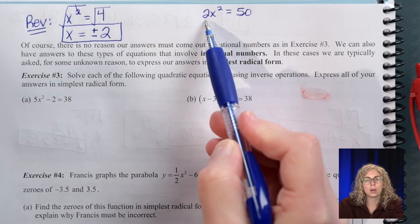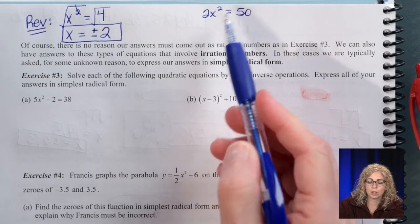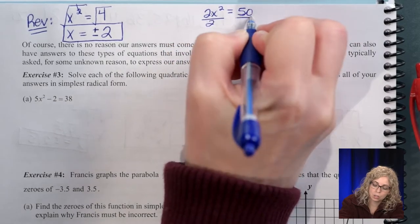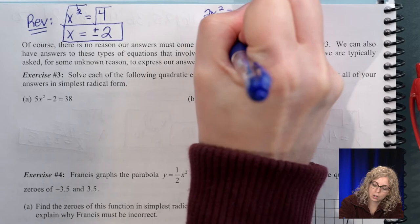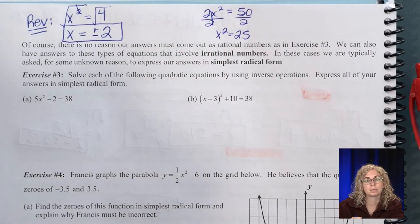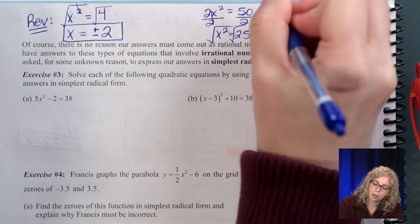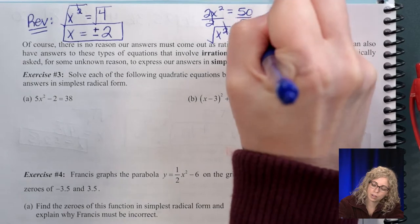When there is another number or numbers on the side with x squared, we must get rid of those. So the opposite of multiplying x squared by 2 would be dividing x squared by 2. So now we get x squared equals 25. And then now undo the square with the square root. And we get x equals plus or minus 5.